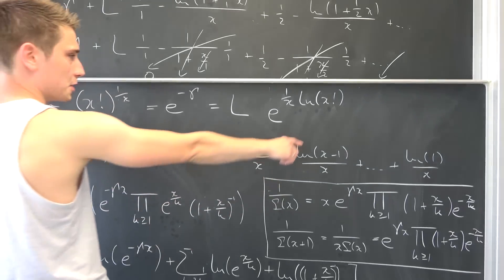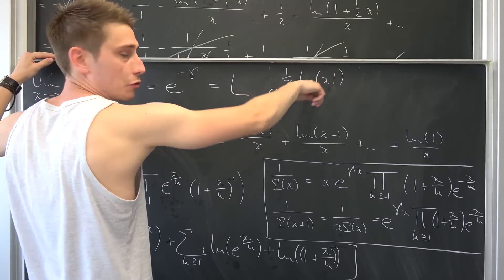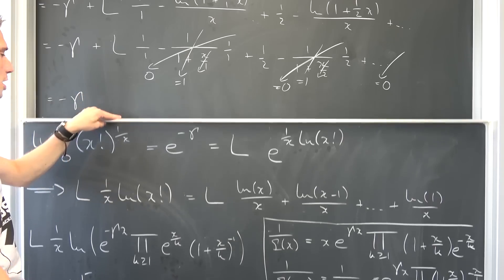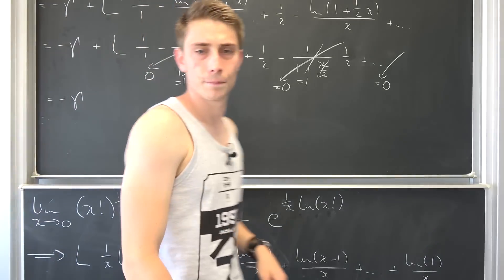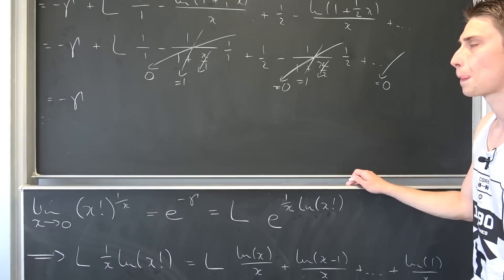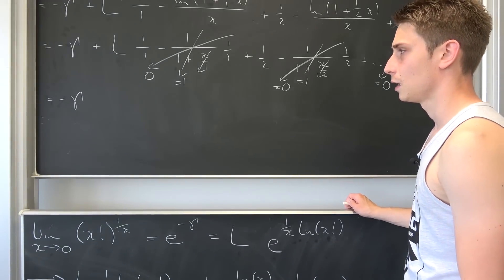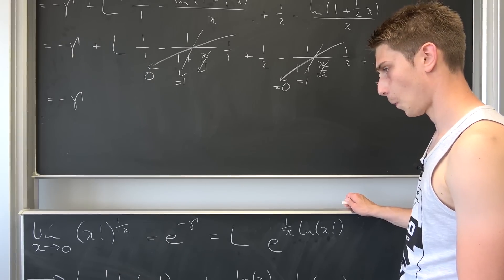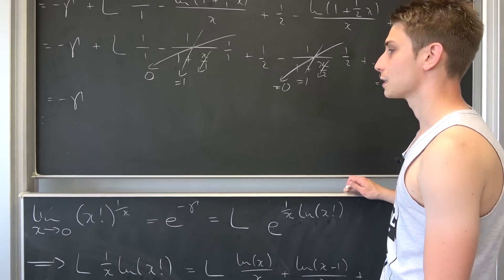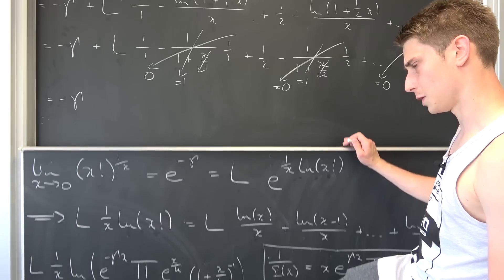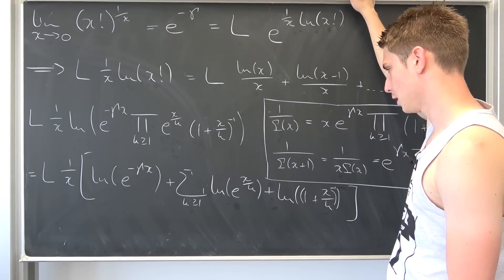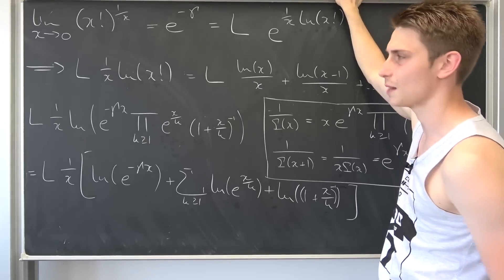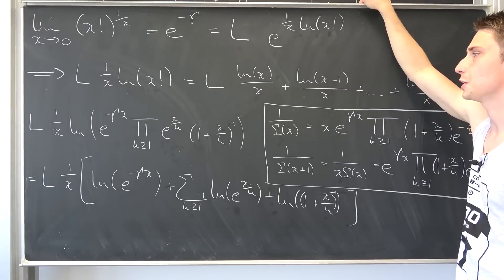That's the whole improvised session. I think this worked pretty smoothly — not too hard. Thanks to the Weierstrass definition, which already combines Γ and the Euler–Mascheroni constant — that's what made it work.